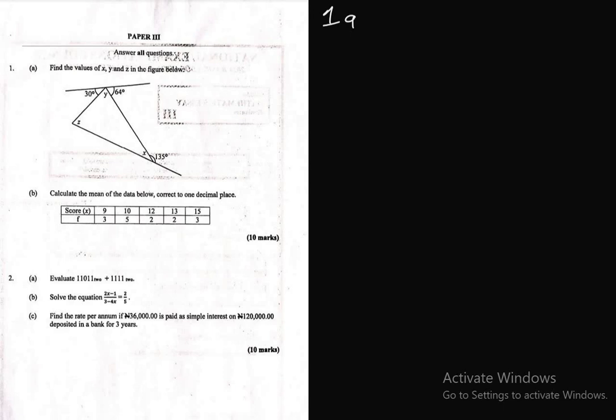So question number 1a, let's start with that. This question says find the values of x, y, and z in the figure below. I'm going to solve in the question paper. Now let's start from this straight line from this point down to this point. This forms angle on a straight line. In mathematics, angle on a straight line must be equal to 180. So to get y, I can bring out that straight line angle so it looks something like this.